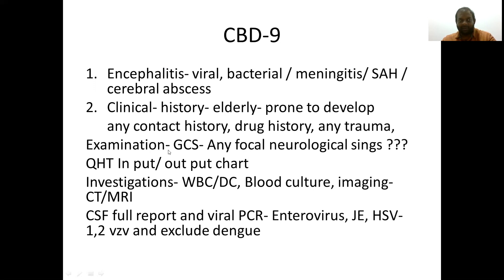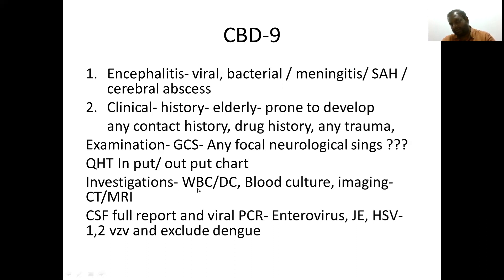On examination, we have to assess the Glasgow Coma Scale, and look for any focal infections, focal neurological signs, or focal deficits like visual disturbance, inability to move the arm, or any motor or sensory defects. We also assess temperature, input and output. Investigations include hematological workup — white cell count, differential count — microbiological such as blood culture, inflammatory markers, and emergency imaging like CT or MRI, followed by CSF analysis.